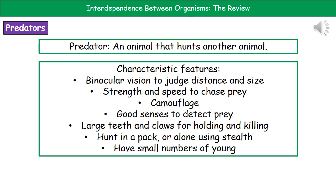There are a few characteristic features of predators. First, they've got binocular vision, meaning their eyes are on the front of their head, which allows them to judge distance and size — both important when hunting. They need to be strong and relatively fast in order to chase their prey. They also need to be camouflaged to blend in with their surroundings to stalk up and have a better shot at getting that prey.